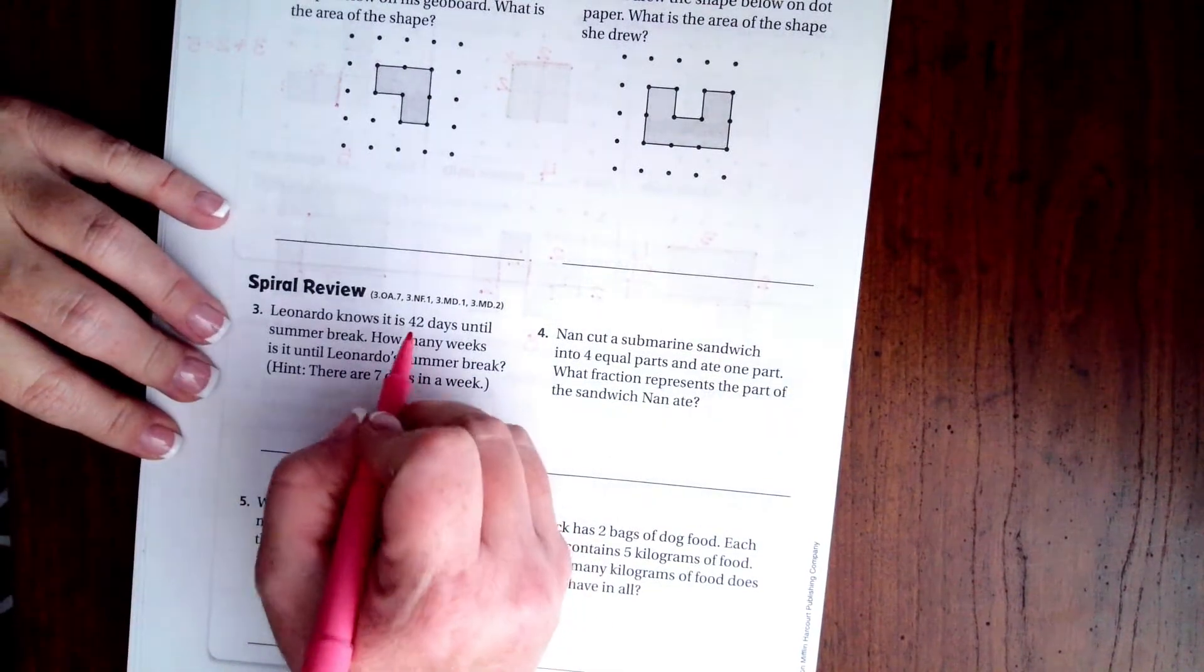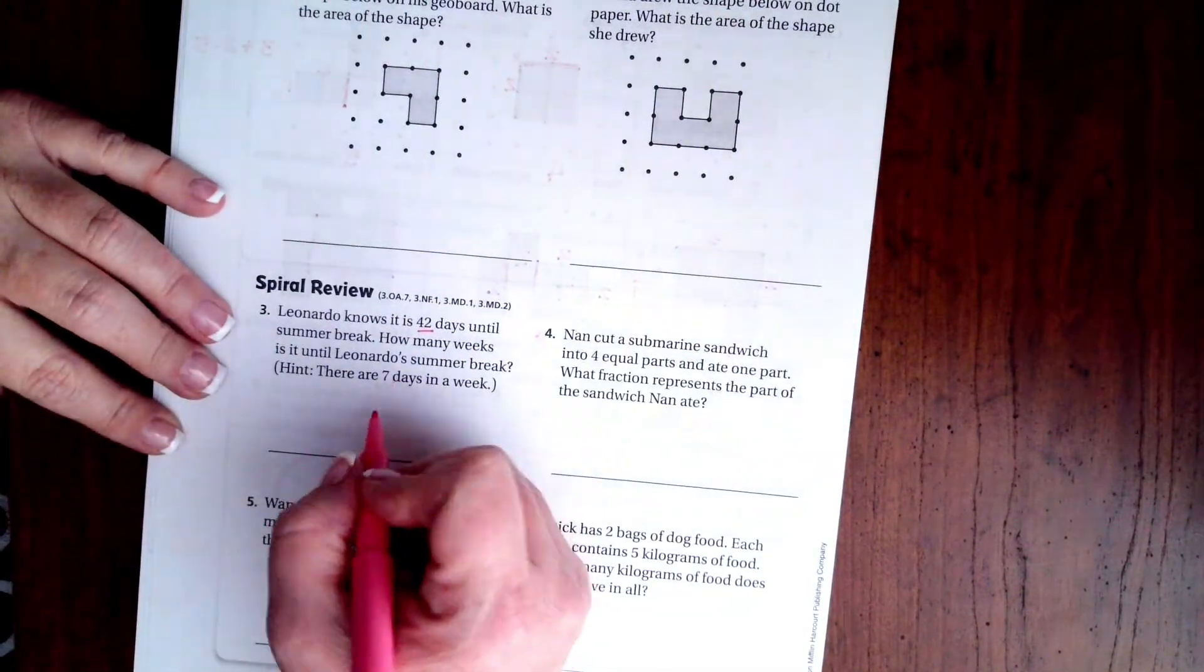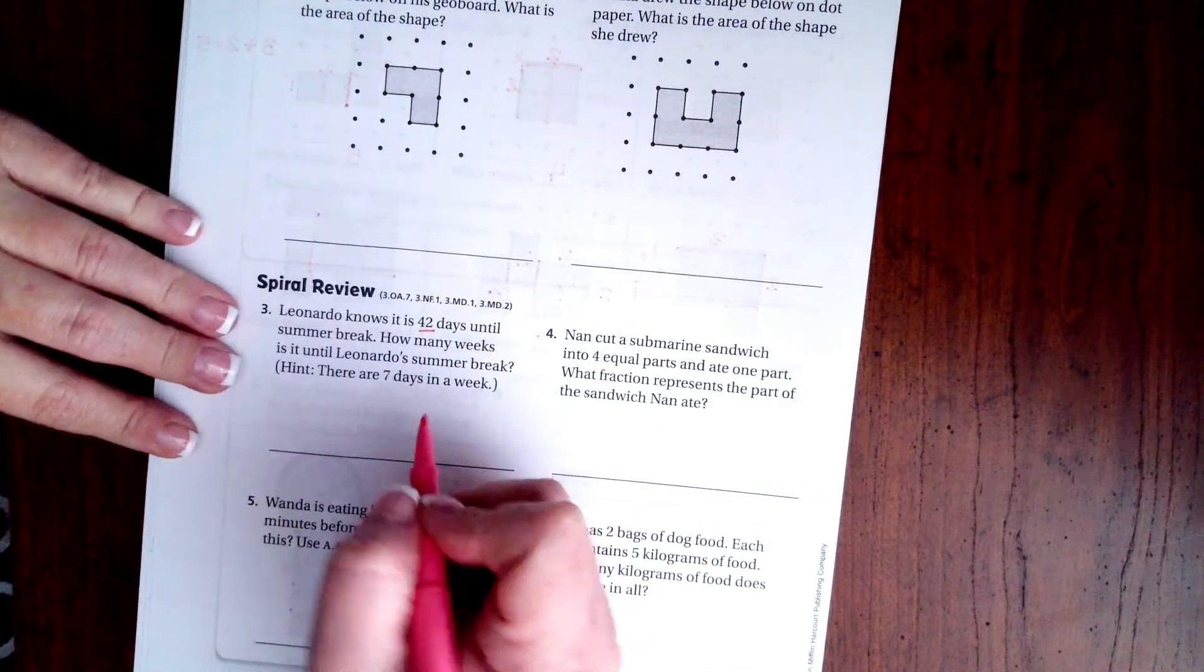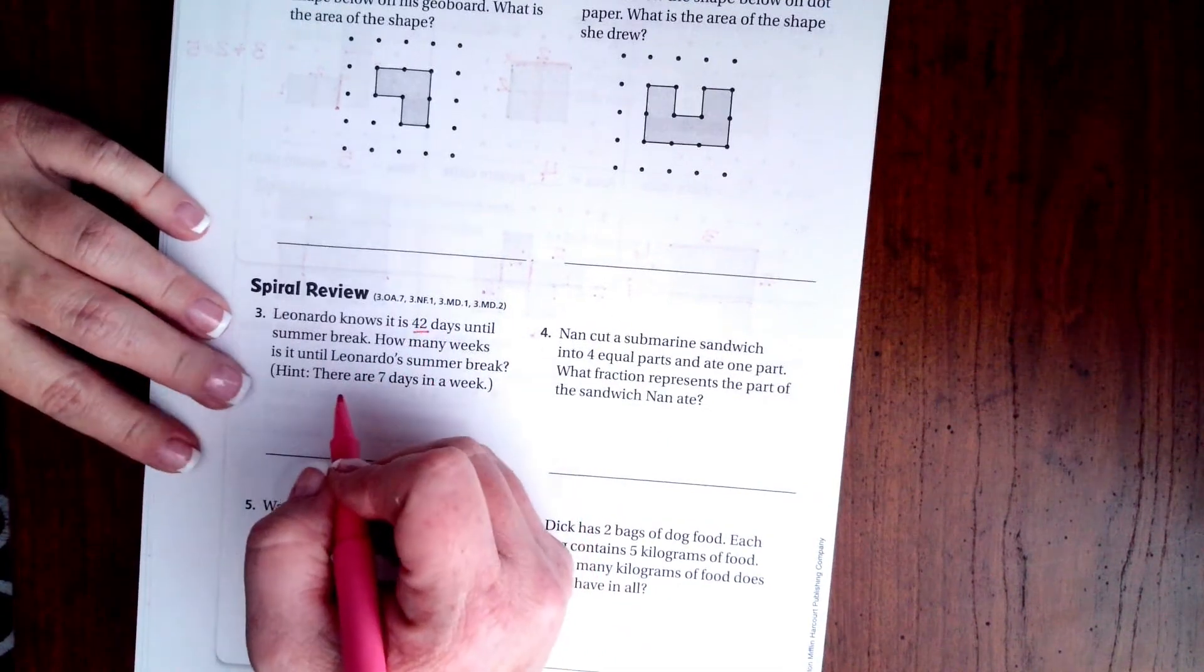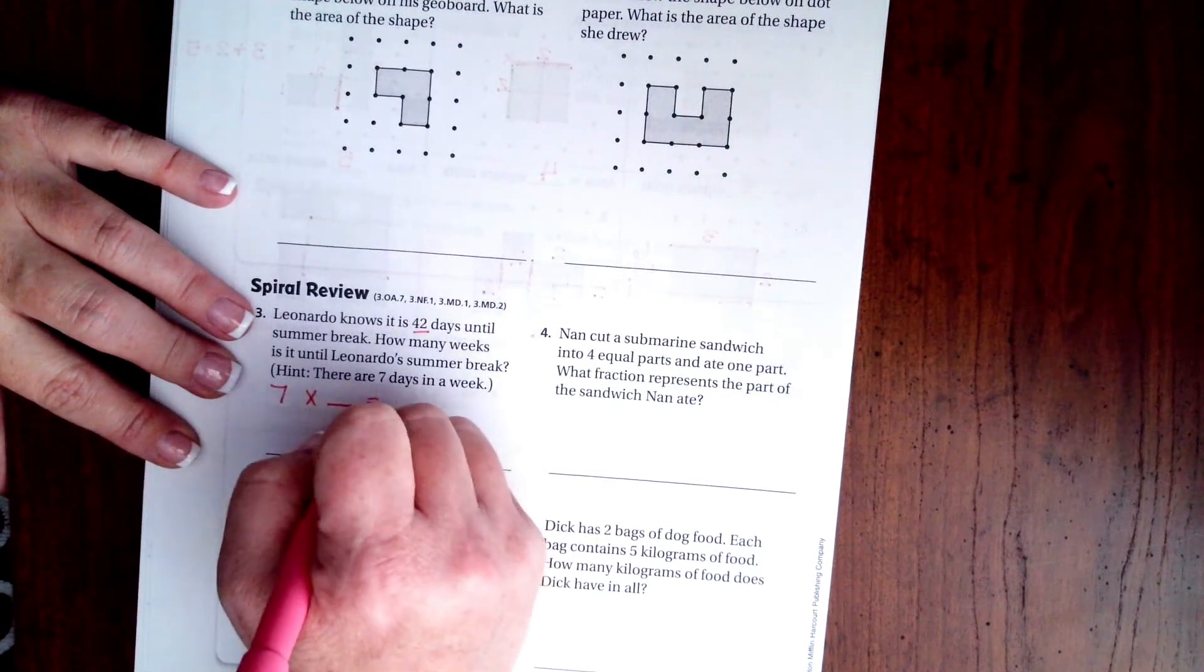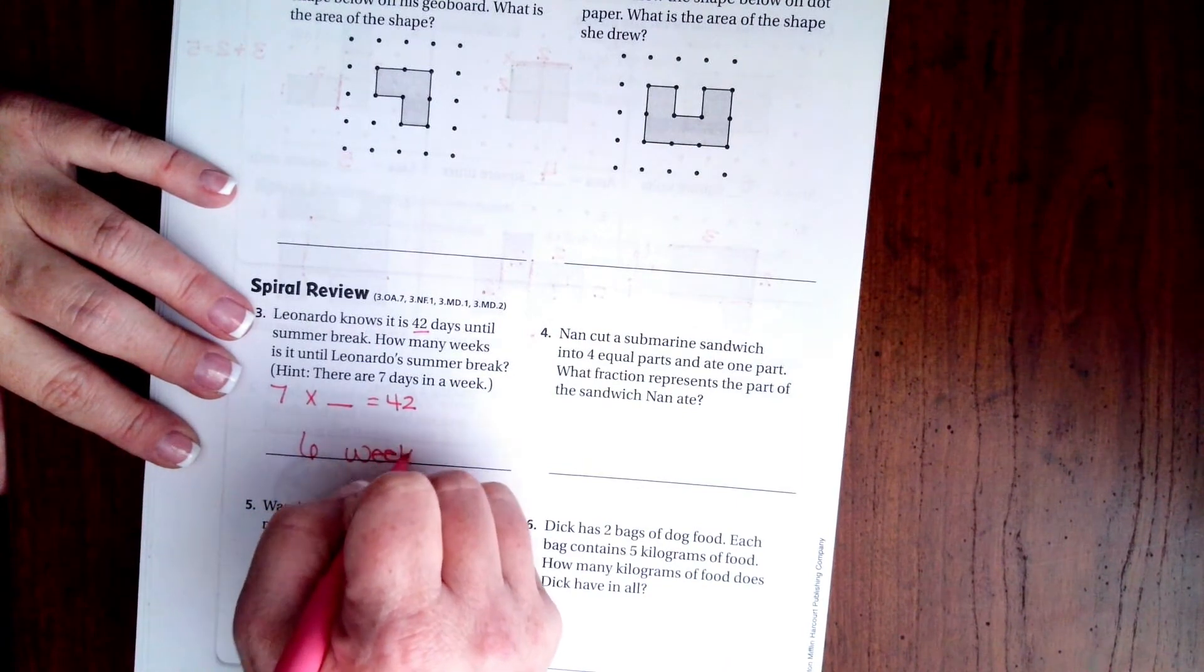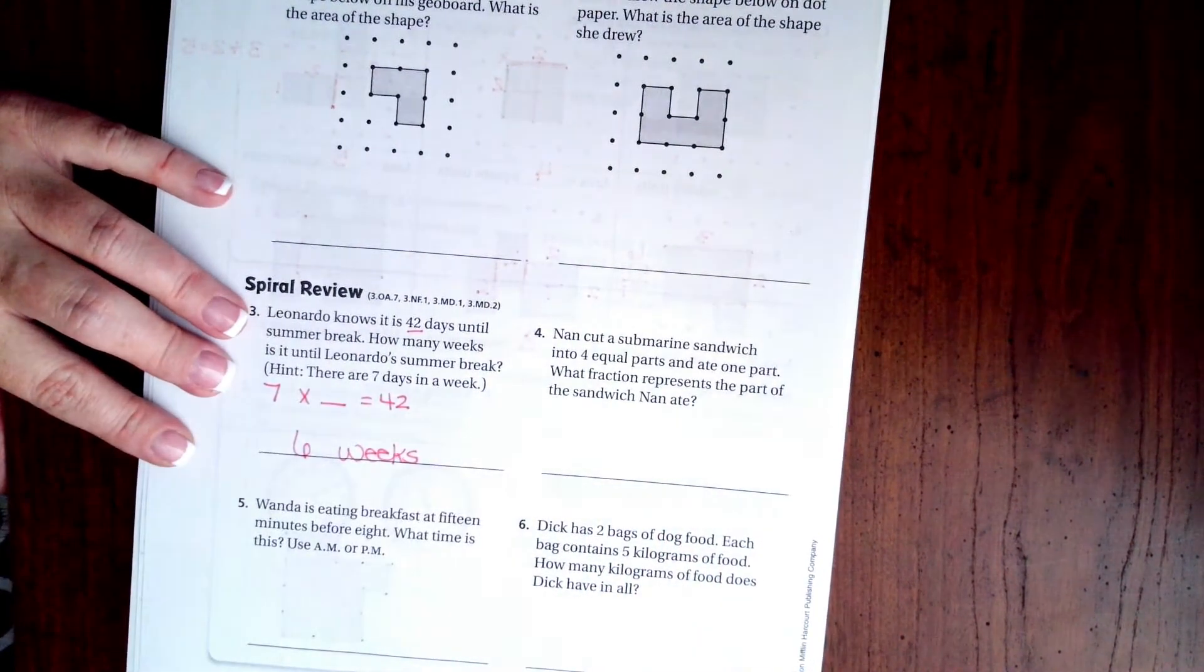Leonardo knows it is 42 days until summer break. How many weeks is it until Leonardo's summer break? There are 7 days in a week. So we're going to take 42 and divide it by 7. Or we could say 7 times what is 42? Well, I know 7 times 6 is 42. So it's 6 weeks.